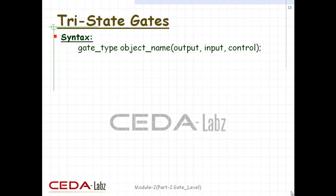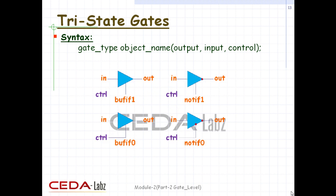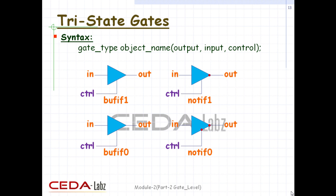The syntax is a little different: gate type followed by instance name with enclosed brackets containing port list, where ports are output, input, and control. These gates propagate only if their control signal is asserted; they propagate Z if their control signal is deasserted. These gates are used when a signal is to be driven only when the control signal is asserted, such as when multiple drivers drive the signal on mutually exclusive control signals.